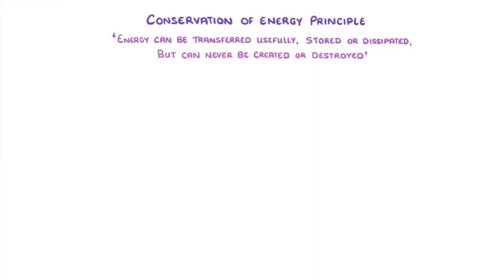So basically, we can't make new energy or destroy it. It can only move between different objects and different forms. Now, you don't need to worry about remembering any of the specific examples that we're going to use in today's video. But you do need to understand the concept of conservation of energy and be able to apply it to different scenarios.